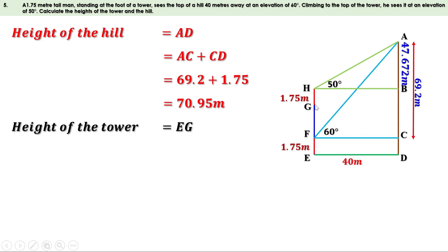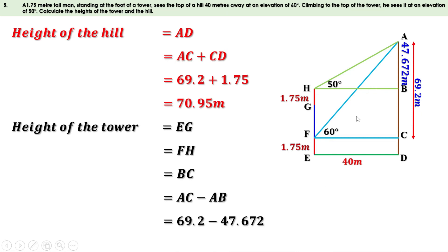The height of the tower is EG, and EG equals FH. FH equals BC, and BC equals AC minus AB. AC is 69.2 and AB is 47.672, so BC equals 69.2 minus 47.672. Subtracting, we get 21.528 meters. The height of the tower is 21.528 meters.